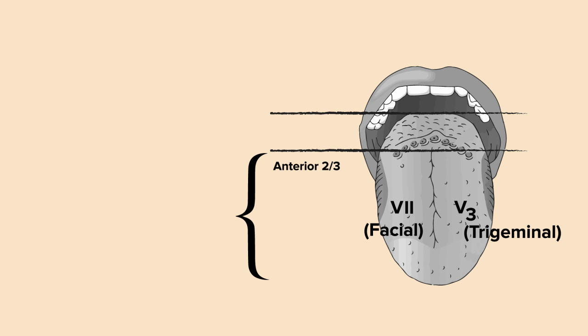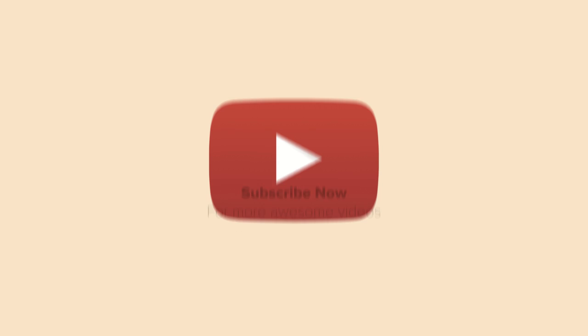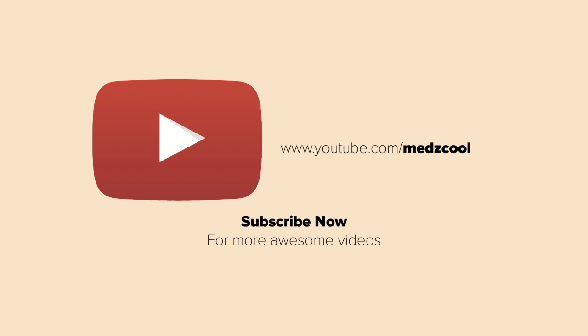Regarding motor function to the tongue, let's add the sensory and taste cranial nerves of the anterior portion of the tongue. That would be 7 plus 5, which equals 12. Cranial nerve 12 is the hypoglossal nerve, responsible for movement of the tongue.